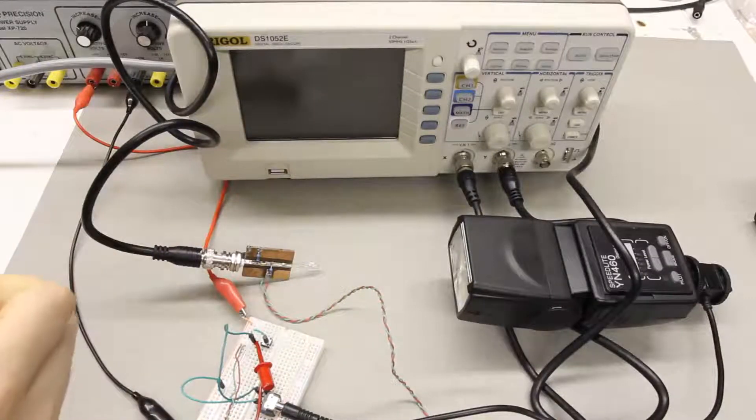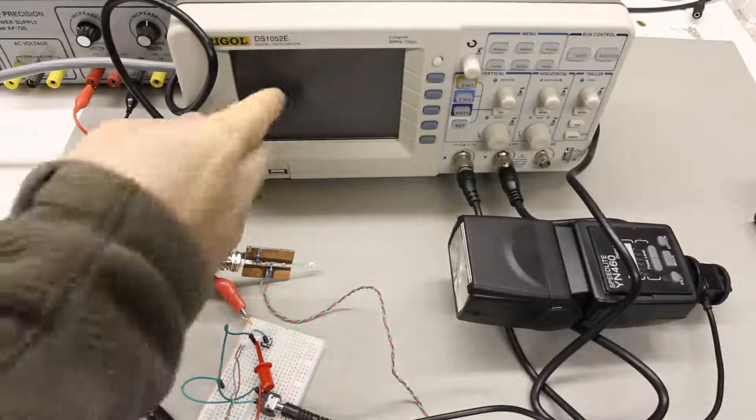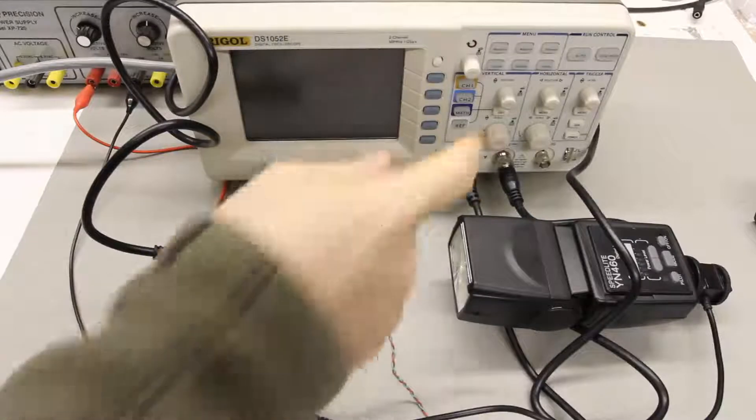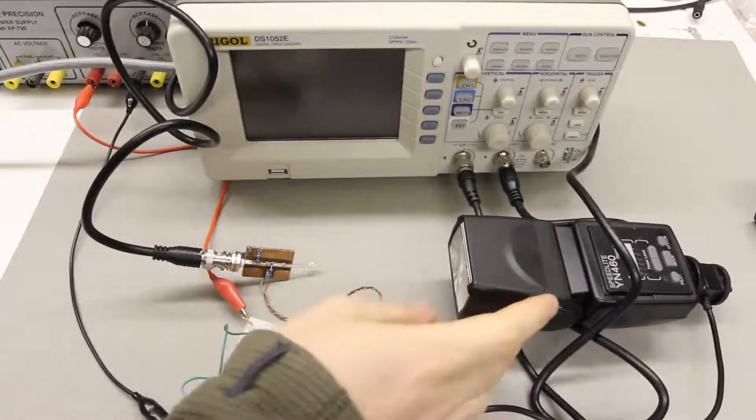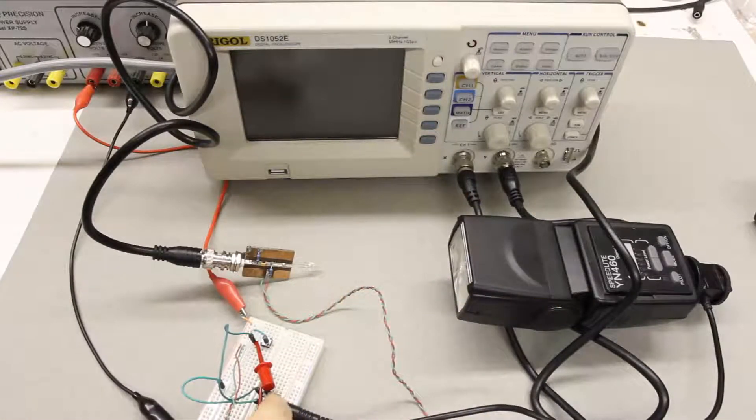So here's the basic setup I'm using to measure the flash lag. Channel one of the oscilloscope is hooked up to the input of the flash right here on the breadboard.